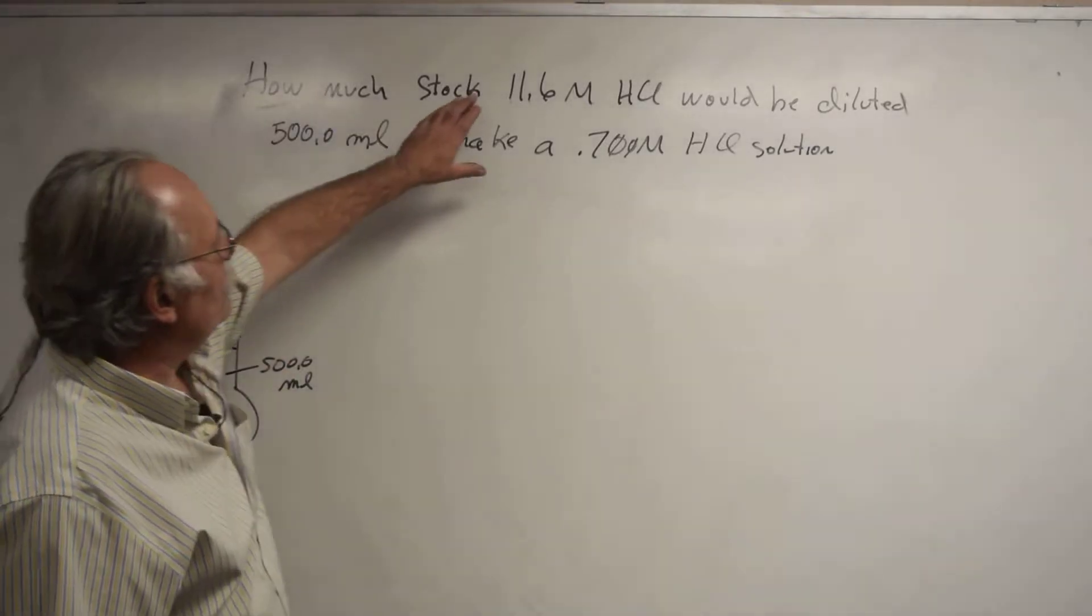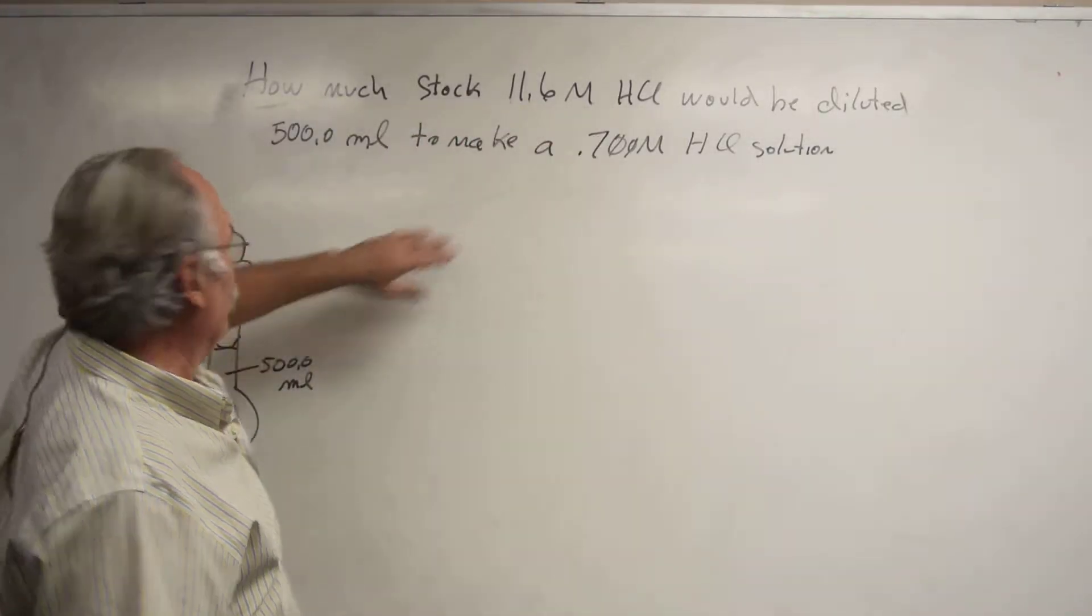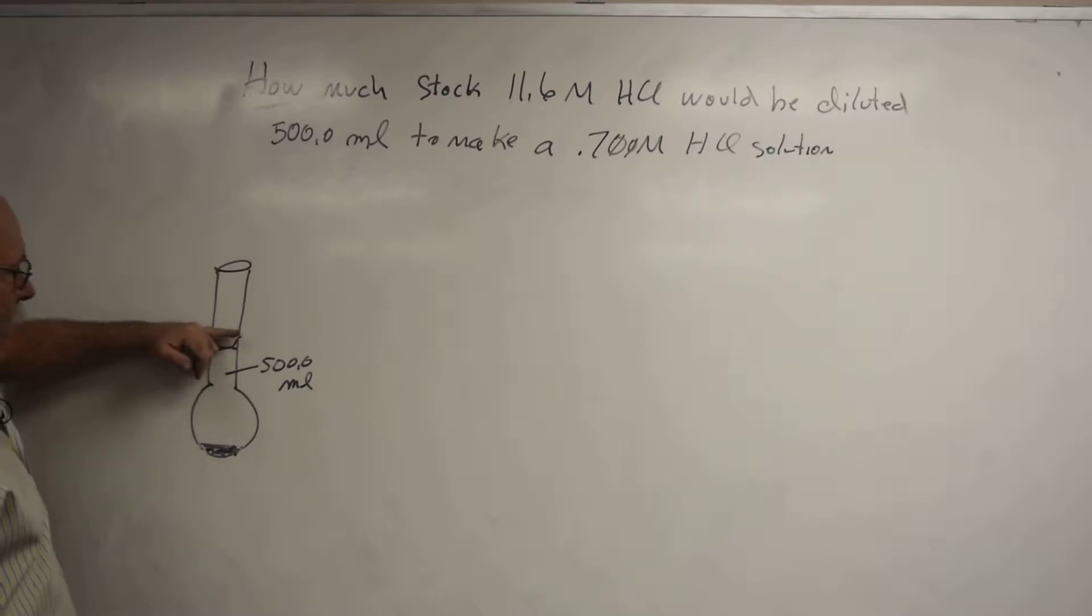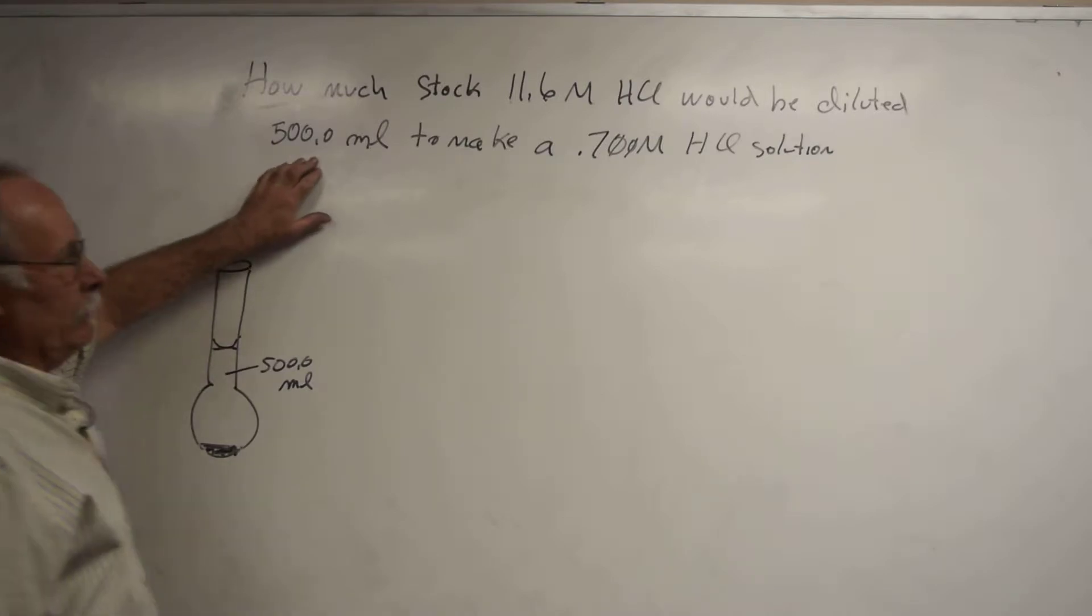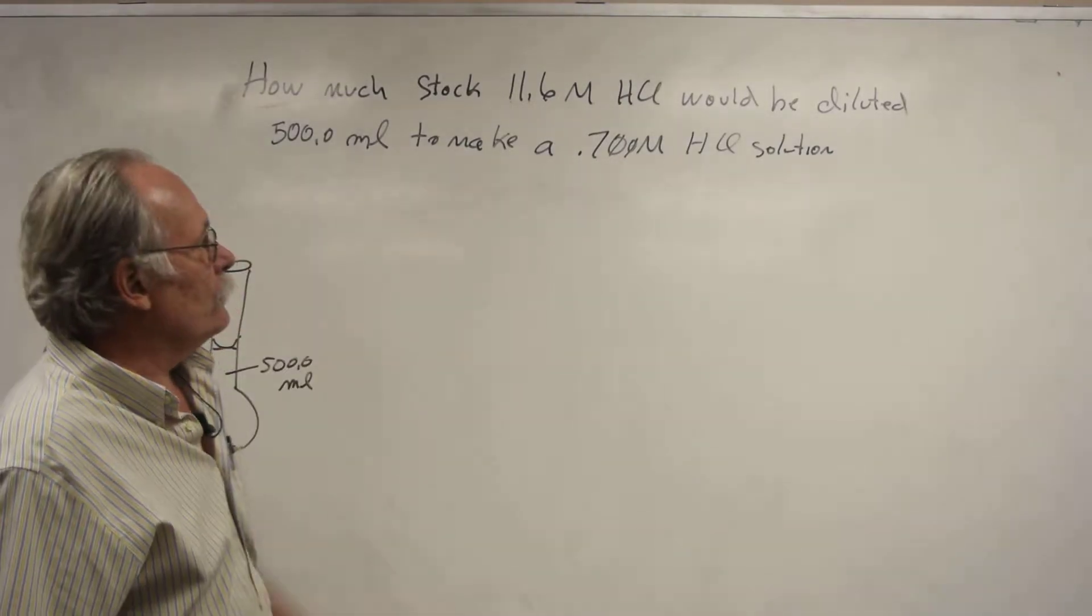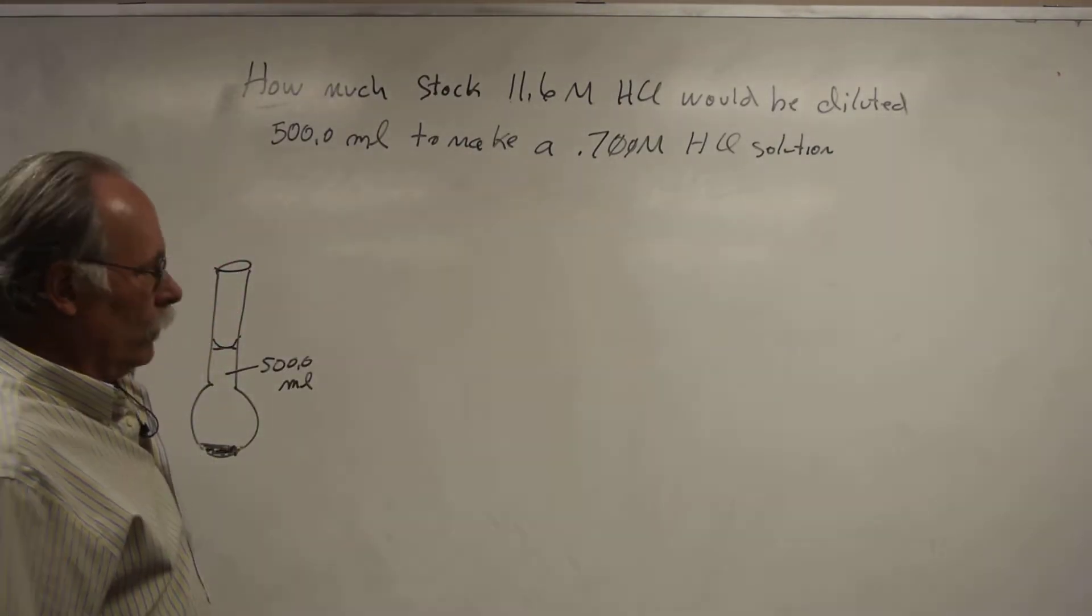We want to ask ourselves how much stock 11.6 molar HCl would I need to add to a 500 milliliter volumetric flask so that when I diluted it to a total volume of 500 mL, it has a diluted concentration of 0.7 molar.